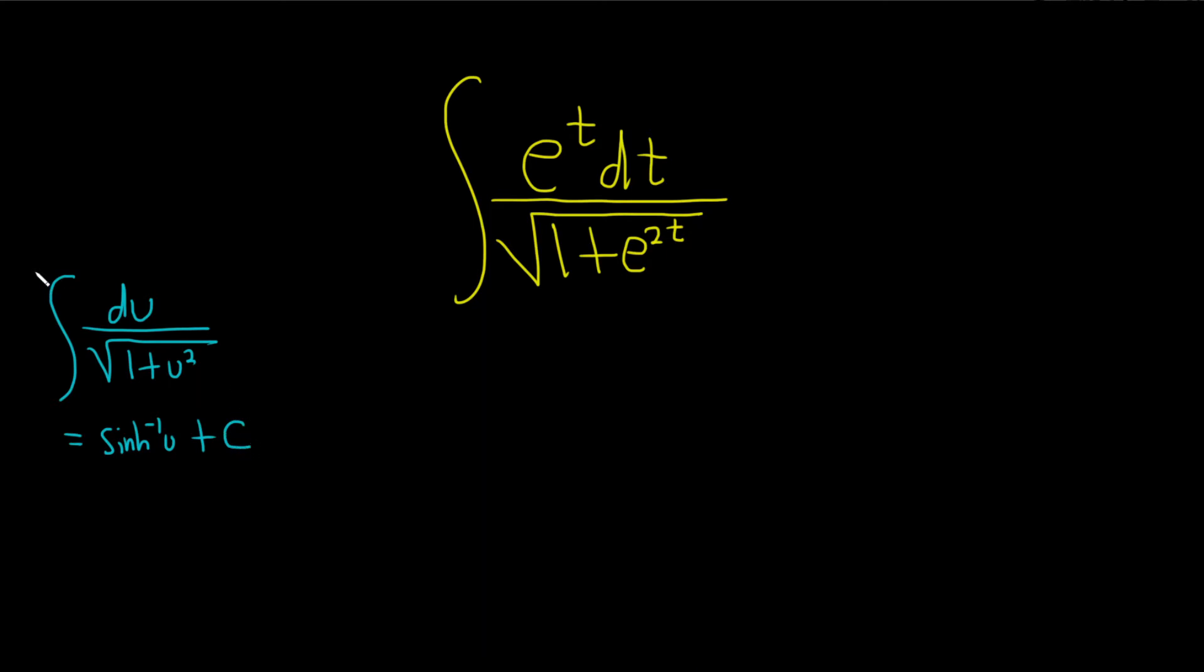And we're thinking of this formula because we have the square root, and this bottom piece here can be rewritten as follows. Watch this. This is e to the t dt over, and then this e to the 2t, you can actually write that as e to the t squared. That's the first thing I noticed.